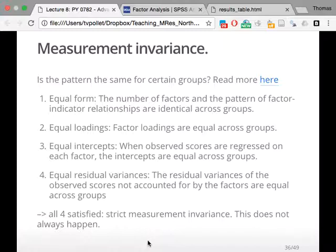If all four are satisfied, we have strict measurement invariance. This does not always happen. In fact, it's quite rare. Most of the time we will have one of the lower things. But we might already be quite happy to establish that in Zimbabwe and Australia, we always find five factors for personality, or we always find the same type of construct for intelligence. That might already be quite good.